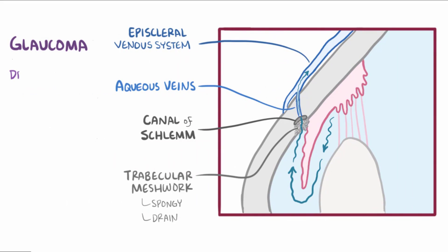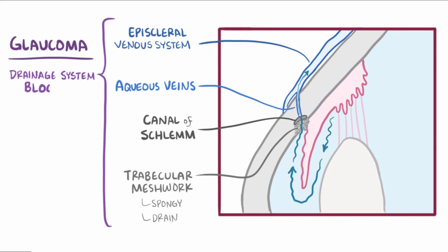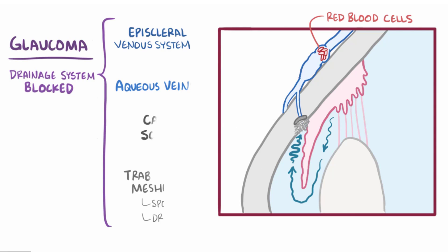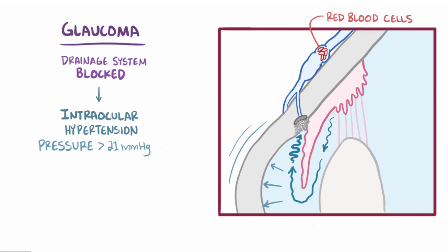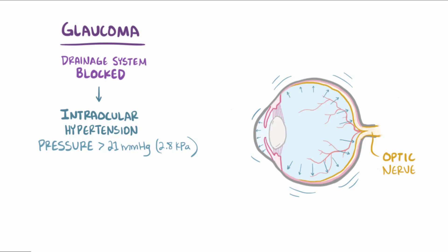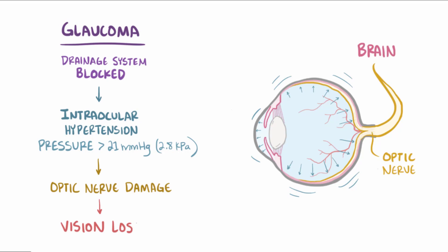In glaucoma, part of this aqueous humor drainage pathway becomes partially or completely blocked — for example by trapped red blood cells or white blood cells — so fluid can't easily drain out. This causes pressure within the anterior chamber to quickly build up, causing intraocular hypertension, defined as pressure greater than 21 mmHg or 2.8 kilopascals. This high pressure damages the optic nerve, the nerve that carries visual information to the brain, leading to vision loss.